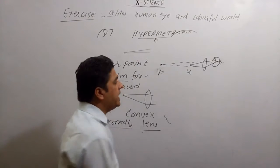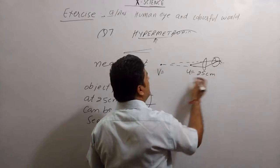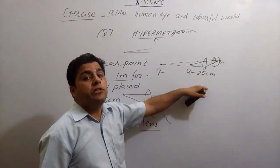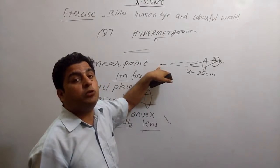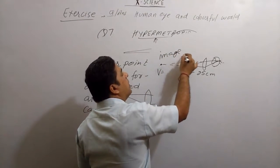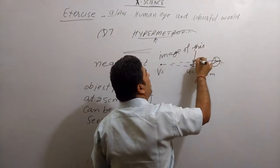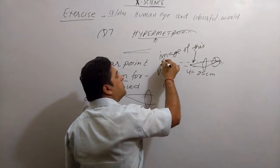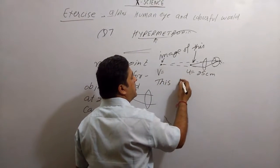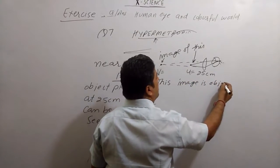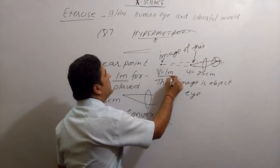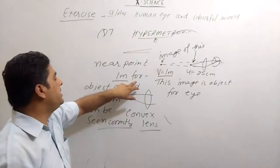Actual object is this. Actual object is placed at 25 centimeter, but this eye cannot see at 25 centimeter. This can be seen if you will send this book to this point, maybe through the lens. So, this is the image of this object. And this image is object for the eye that can be seen easily. One meter, as the question said, the near point is one meter for the object. Object placed at 25 centimeter.